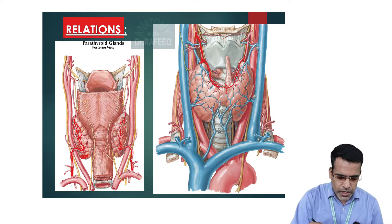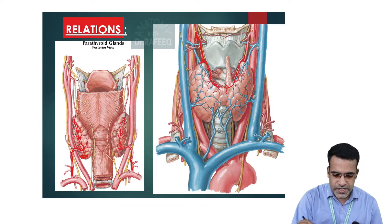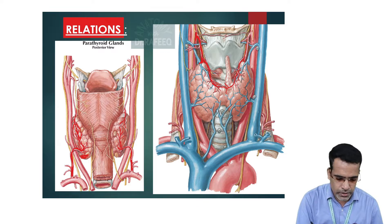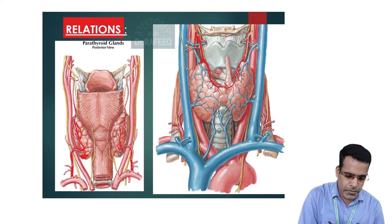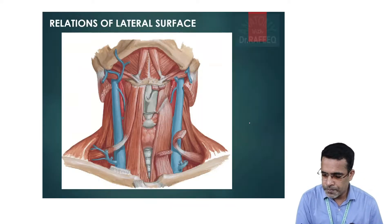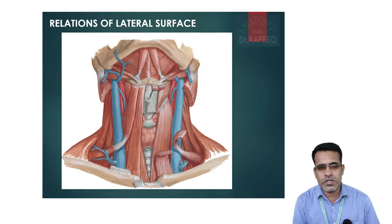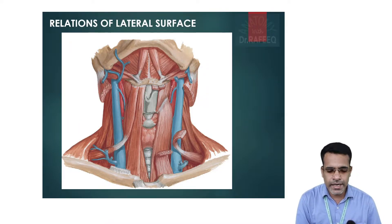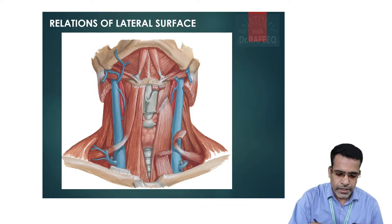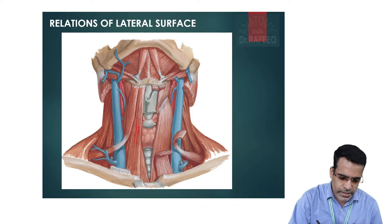To summarize the surface relations: the base is related to the inferior thyroid artery, and the apex is related to the superior thyroid artery. Next, considering the lateral surface of the thyroid gland, this lateral surface is related to certain muscles — the infrahyoid muscles.